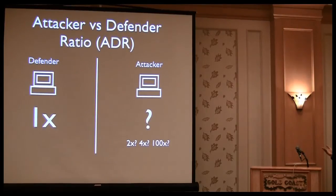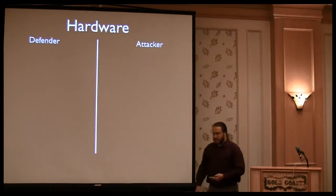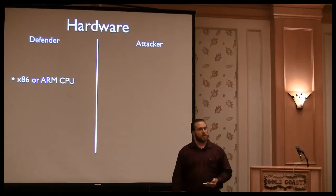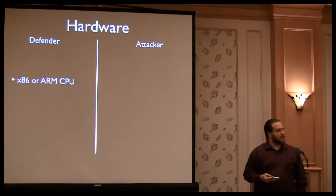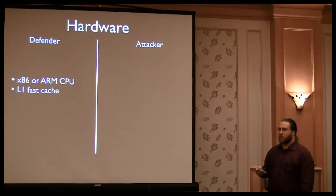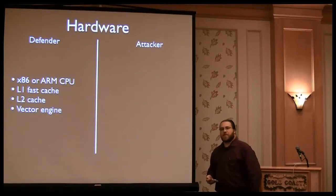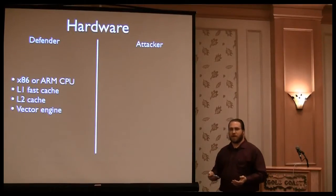What I'd like to explore is how we can make this ratio better and reduce the speed-up of password algorithms. I have some algorithms to point out as spectacularly bad examples. The defender — your web server or corporate authentication server — is typically running an x86 or ARM CPU. Data centers typically have L1 and L2 cache, though we don't make great use of that, and a vector engine. Pretty much any x86 or ARM CPU in the data center now has at least SSE or ARM NEON extensions.